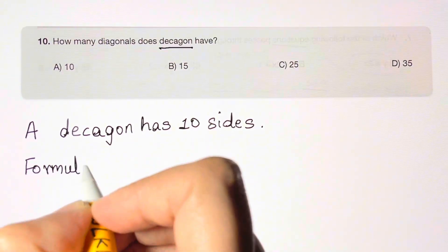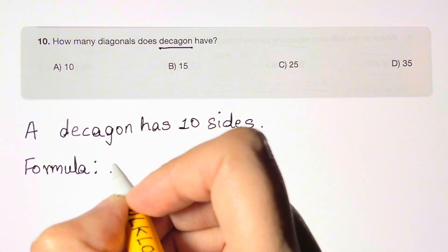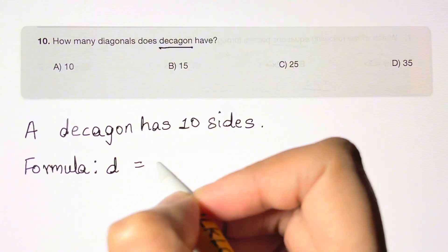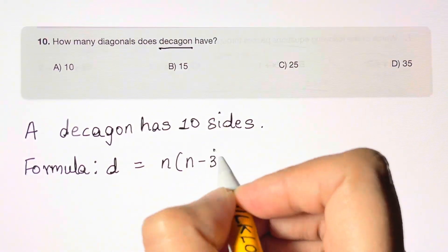So the formula which you have to remember to find the diagonals is n times n minus 3 over 2.